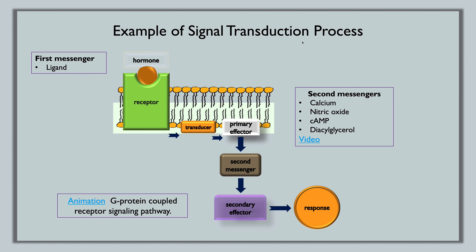Here is one example of signal transduction. The hormone — for example, epinephrine — binds to a receptor on the cell membrane. This alters the protein shape, activating a transducer, which activates a primary effector, which activates a second messenger, and the second messenger activates the secondary effector responsible for the cell's different actions. For every hormone, substance, receptor type, and transducer, we will have a totally different response — this is a broad, general explanation.